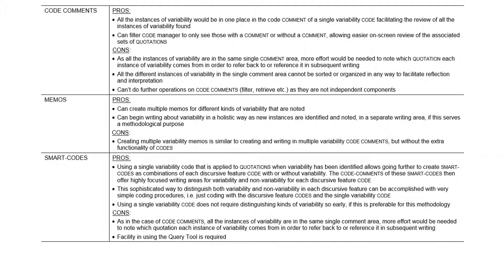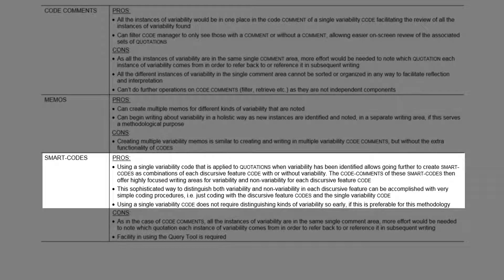The final possible component to consider is smart codes. Let's assume we've weighed up the pros and cons and decided that a single code for variability provides the best choice so far, as Trina in fact decided in her project. The disadvantages of writing in the single comment area of this code led her not to use the comments at all, but to switch to working in Word and exiting Atlas TI, because developing a set of multiple variability codes for different kinds of variability was not a good fit for the methodology. However, considering smart codes offers additional advantages that do fit the methodology and builds on the choice of having a single code for variability.